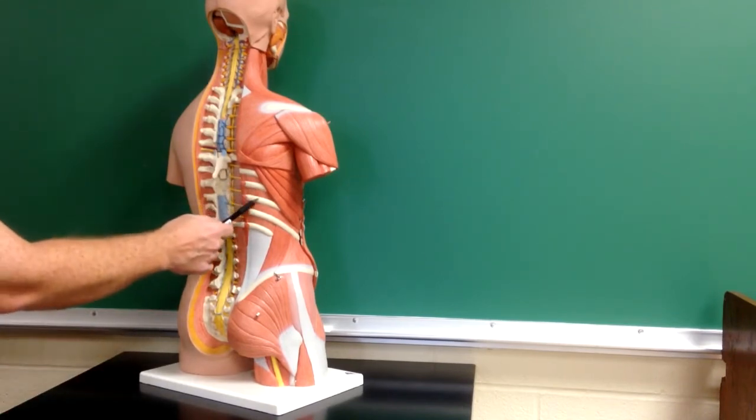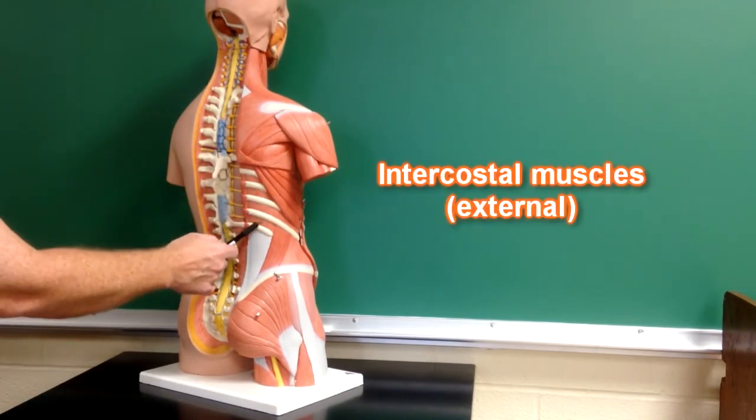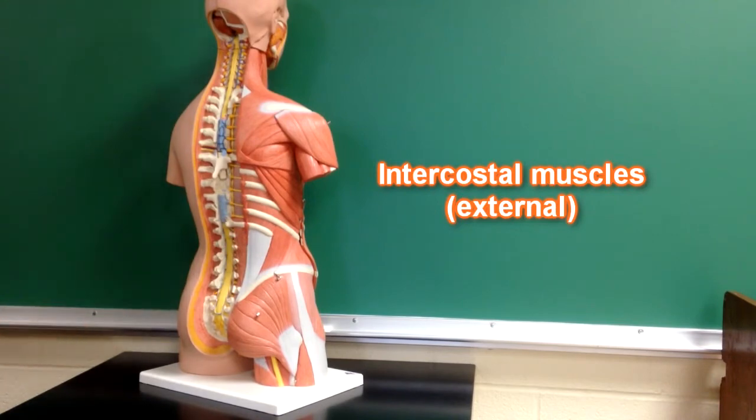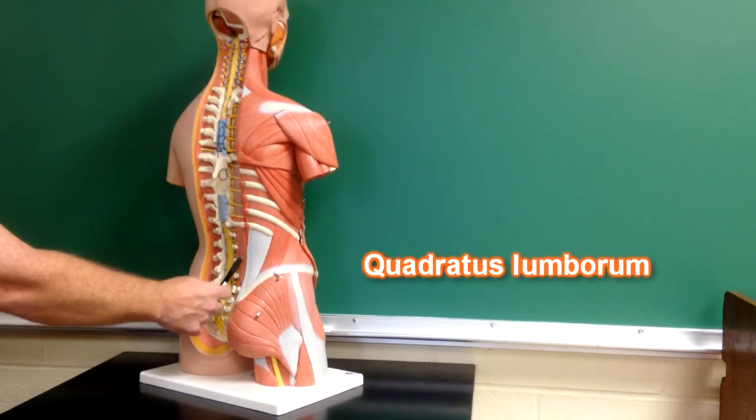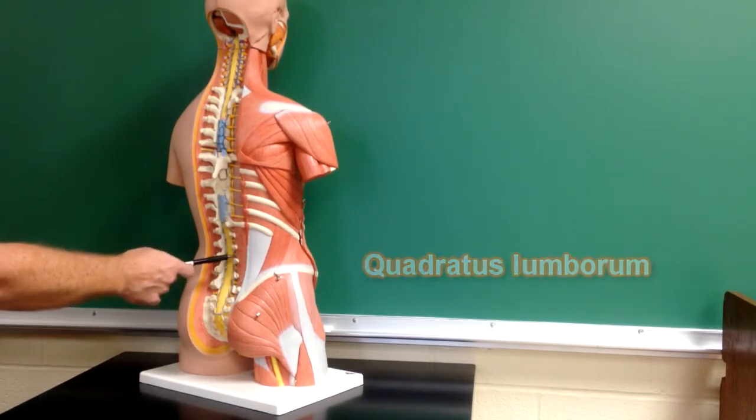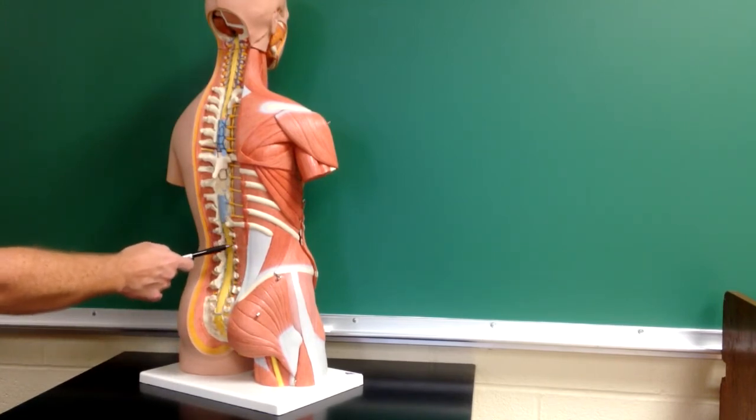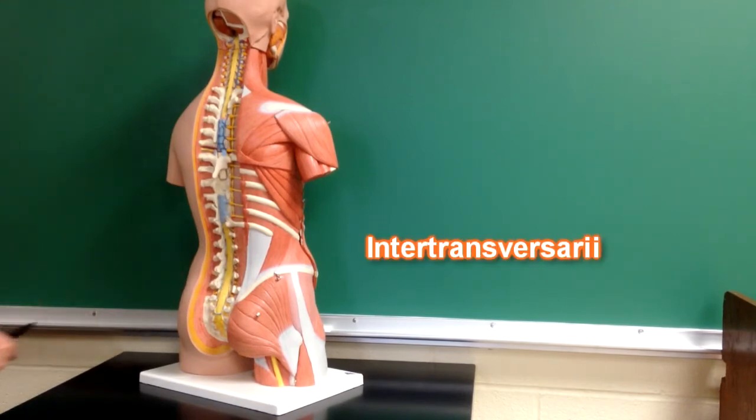In between the ribs here we have intercostal muscles and they would be external intercostal muscles. Down here we have quadratus lumborum muscles. And then in here between the transverse processes we have intertransversarii muscles.